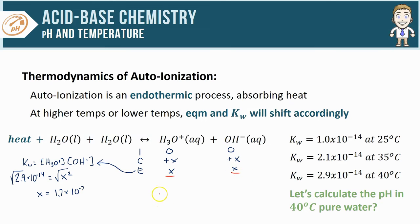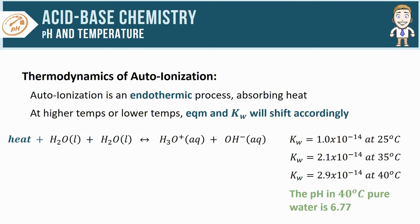If I am trying to calculate the pH, of course then I need to take the negative log of the H3O+, so negative log of 1.7 × 10^-7, which gives me a final final answer of 6.77 for the pH. So the pH of pure water at 40 degrees celsius is 6.77.